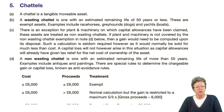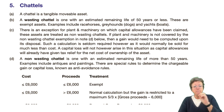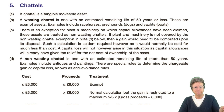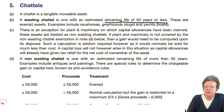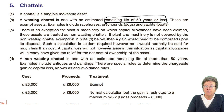Chattels. A chattel is what's known as a tangible — in other words, you can touch it — movable asset. Now a wasting chattel is one that has a life of less than 50 years or less. Examples: racehorses, greyhounds, and yachts.